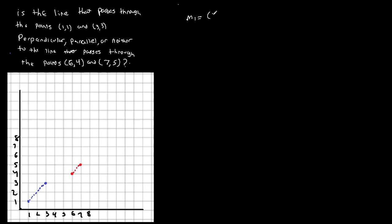So we can do M1 is equal to Y2 minus Y1 over X2 minus X1. And in this case, for the first point we're talking about, we have (1,1) and (3,3). So we will do 3 minus 1 over 3 minus 1. And that's going to be equal to 2 over 2, which is going to be equal to 1. So that's M1.